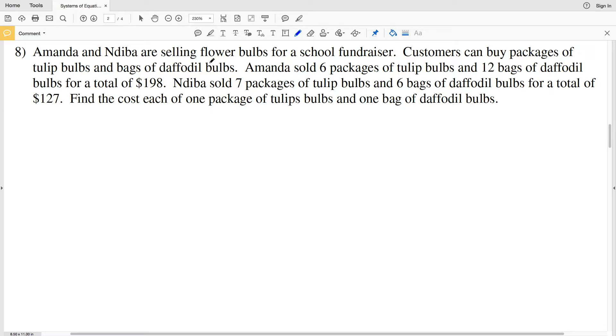Number 8 says that Amanda and Nadiba are selling flower bulbs for a school fundraiser. Customers can buy packages of tulip bulbs and they can buy bags of daffodil bulbs. So those are their two options. Amanda sold 6 packages of tulip bulbs and 12 bags of daffodil bulbs and that totaled $198. Nadiba sold 7 packages of tulip bulbs and 6 bags of daffodil bulbs for a total of $127. We're going to find the cost each of 1 package of tulip bulbs, let's call this variable T, and 1 bag of daffodil bulbs, let's call this variable D.